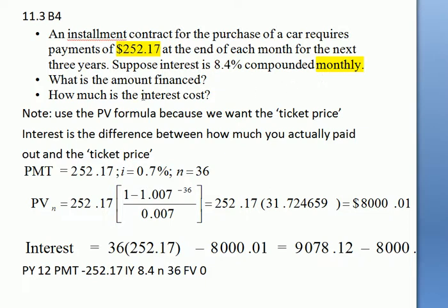The question is what is the amount financed? We can think of the amount financed as the ticket price. We use the PV formula because we want the ticket price, which is how much you actually bought it for.